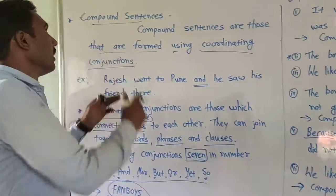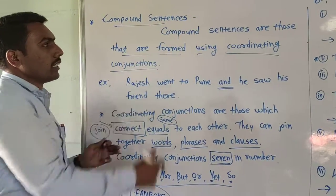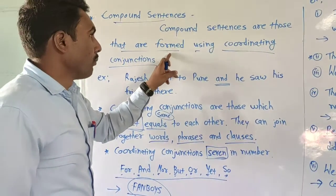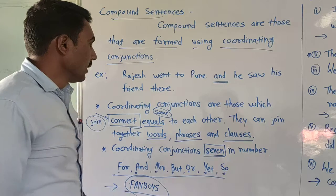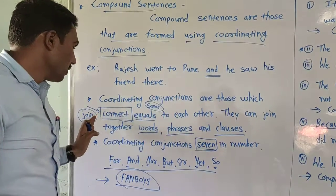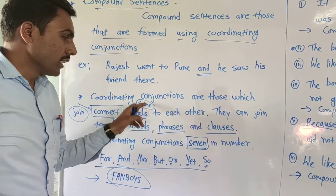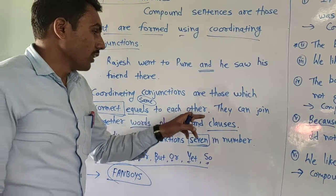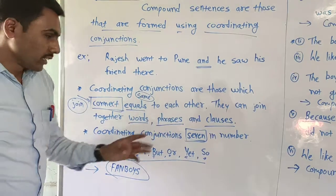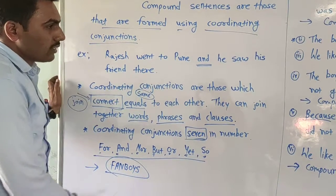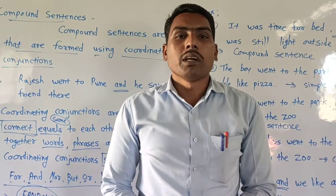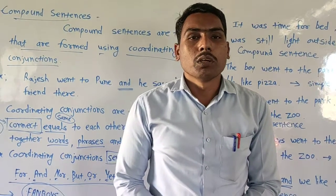Quick recap: Compound sentences are those that are formed using coordinating conjunctions. Coordinating conjunctions are those which join or connect equals — equals means same parts. They can join together words, phrases, and clauses. In this way we can understand all things related to compound sentences. The remaining part of this lesson we will see in tomorrow's class.